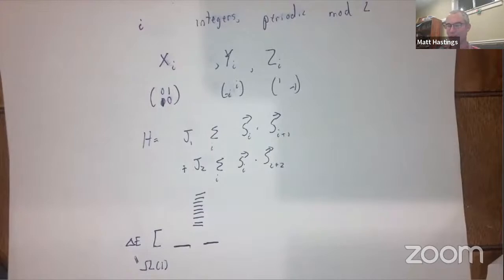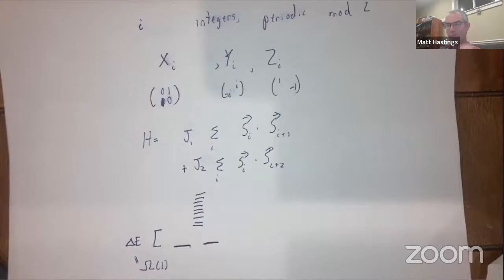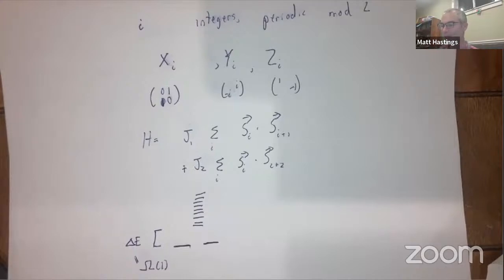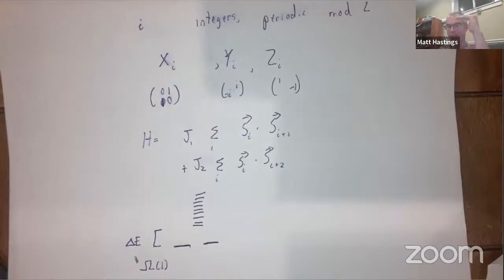This gap is stable for a weak change in J1 and J2 — a non-trivial result. A small change in J1 changes the norm of the Hamiltonian proportionally to the number of sites, which is a large change, yet leads to only a small change in the gap. By a gap we mean some small number of ground states separated by o(1), then a gap to remaining states that is Omega(1).